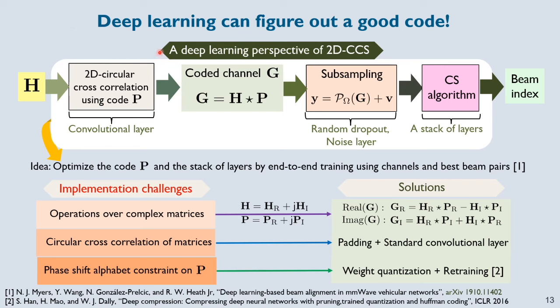It's a difficult problem and an easy way to solve it is using deep learning. I'll explain how the 2D CCS pipeline can be emulated using a deep neural network. First, the compression in 2D CCS which is subsample 2D cross correlation can be implemented with a convolutional layer followed by random dropout. Then, the channel measurements are fed into a compressed sensing algorithm which can be emulated using a stack of layers. Overall, the deep neural network shown in this white box takes in channels, performs 2D CCS and estimates the best beam index. By training the network with pairs of channels and their corresponding best beam indices, the code P and the weights of the following layers can be jointly optimized.